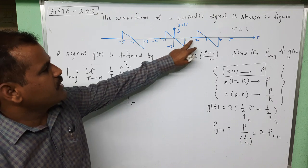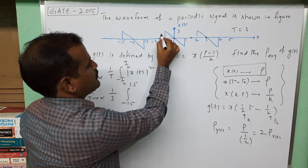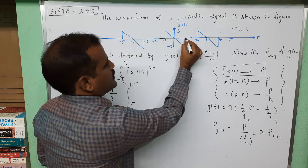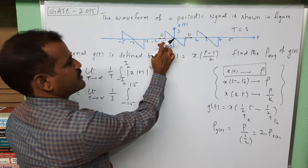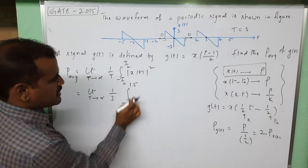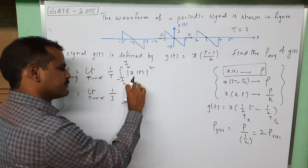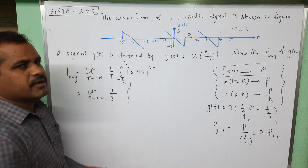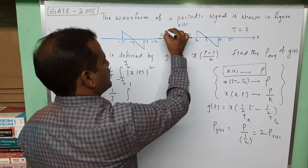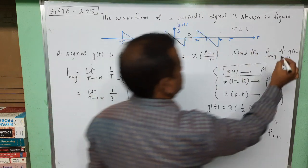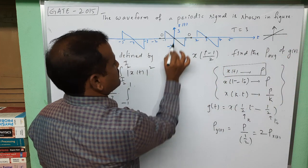Over this interval minus 1.5 to plus 1.5, the signal is zero from minus 1.5 to minus 1 and from 1 to 1.5. It is non-zero over the interval minus 1 to plus 1. So we can change these limits from minus 1 to plus 1, where we see the non-zero waveform.